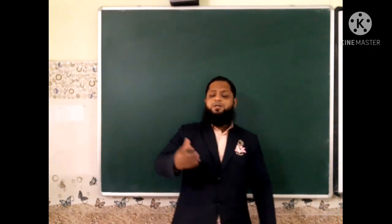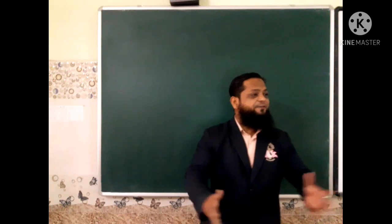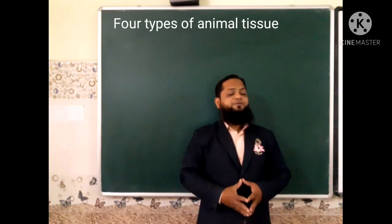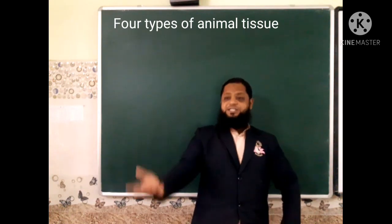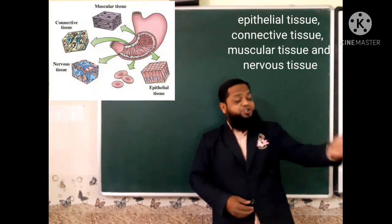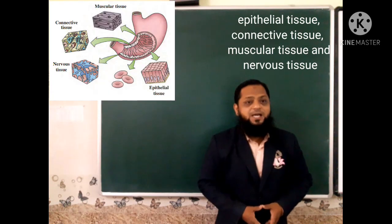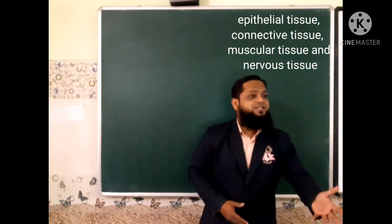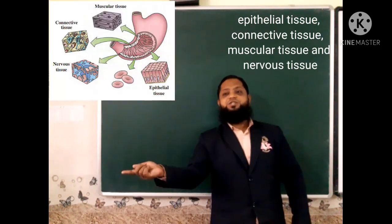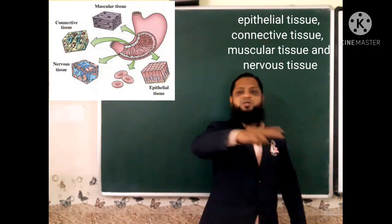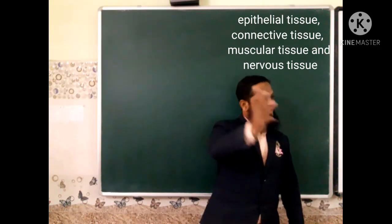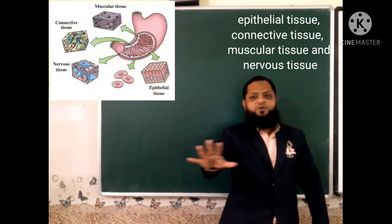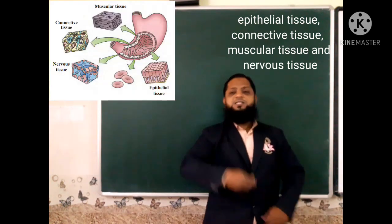Animal tissue is further classified into four different types: first, epithelial tissue; second, connective tissue; third, muscular tissue; and fourth, nervous tissue.